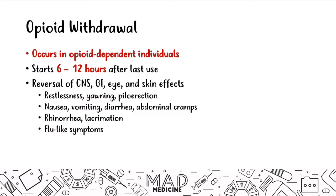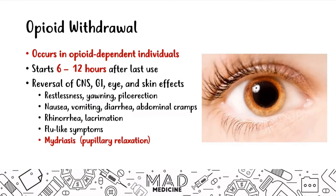The main giveaway for opioid withdrawal is mydriasis — pupillary dilation. In intoxication the pupil is very small; in withdrawal it's dilated. These patients are also going to be very agitated, aggressive, and not sedated — the opposite of the depressive intoxication state.